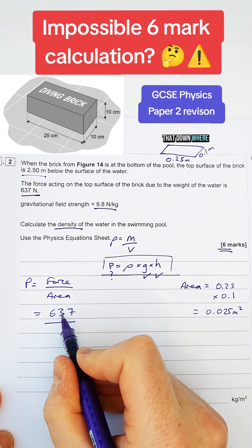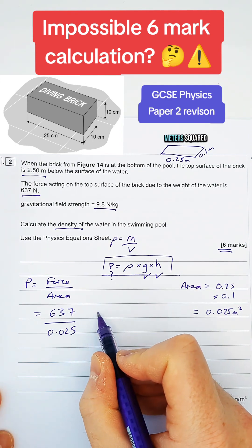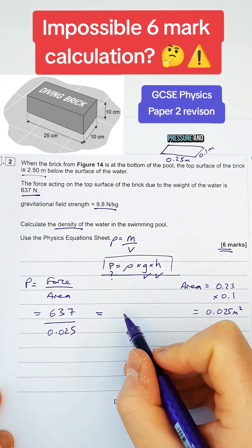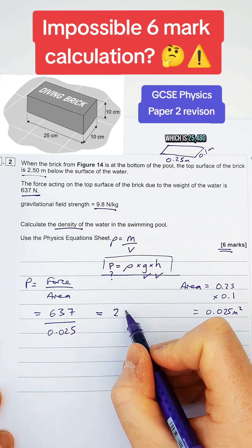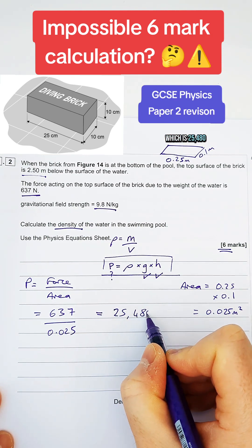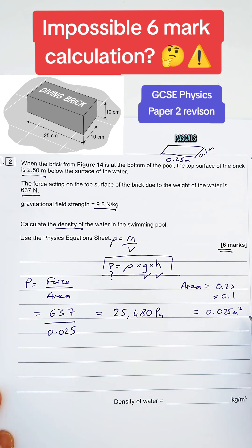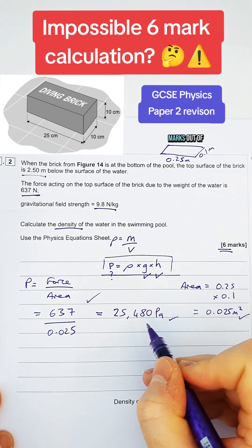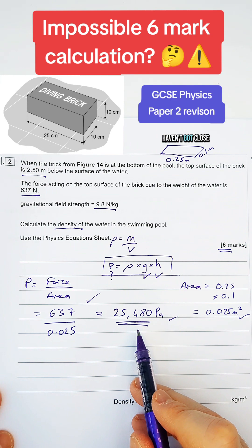So let's put that down where we've got area down here, so 0.025 metres squared, and we can work out the pressure, which is 25,480 pascals. So that's already got us three marks out of our six, even though we haven't got close to our final solution.